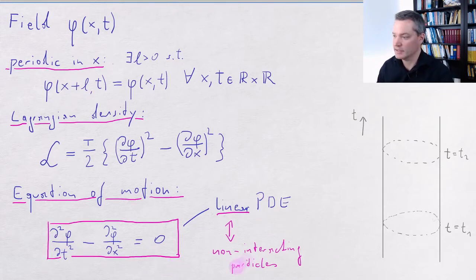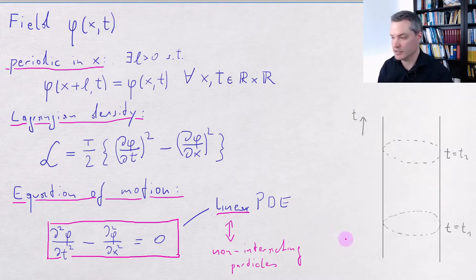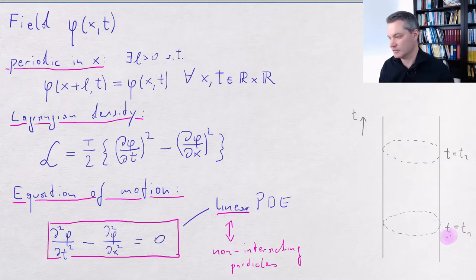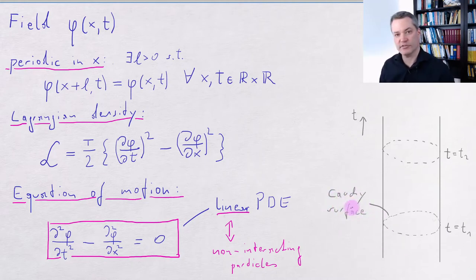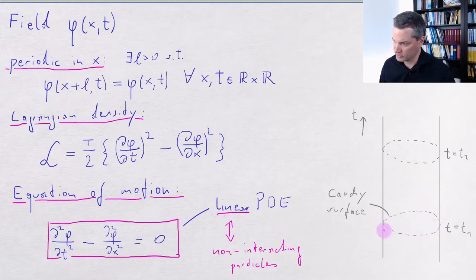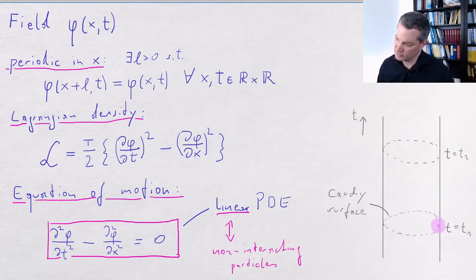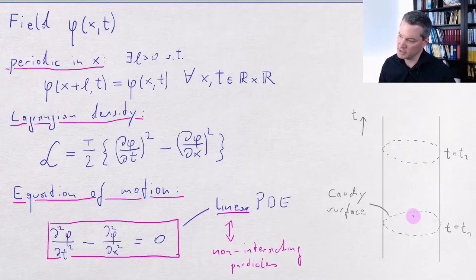Having this equation of motion gives us a second view on the dynamics of the field. It turns out that using the theory of partial differential equations, one can show that a time slice — that is, all the points in space at one particular time coordinate — forms a so-called Cauchy surface. A Cauchy surface is a surface such that specifying initial conditions for the field on this surface, which is in our case just this circle at a given constant time, gives a unique solution of this equation of motion.